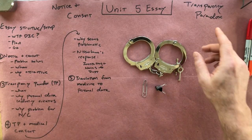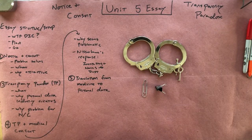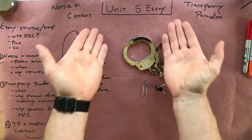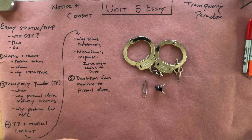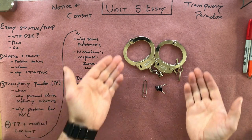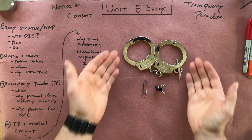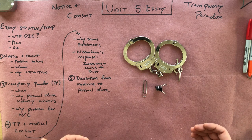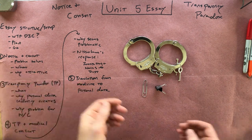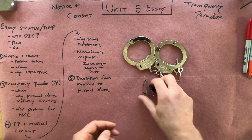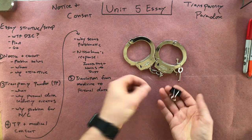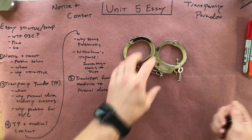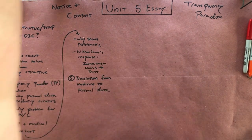Notice and consent. The transparency paradox. Let's talk about the Unit 5 essay. Since apparently a lot of you were induced to watch all the way till the end last time, I'll show you something different with handcuffs at the end of this — I'll show you how to use common objects like that to pick these open.